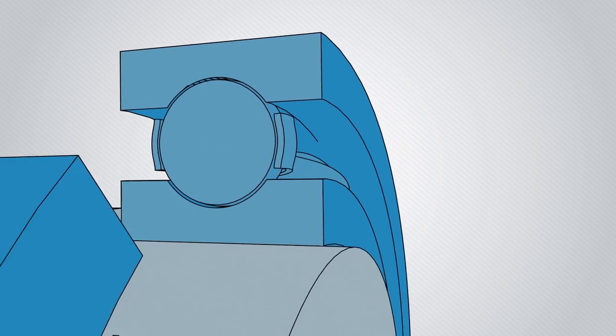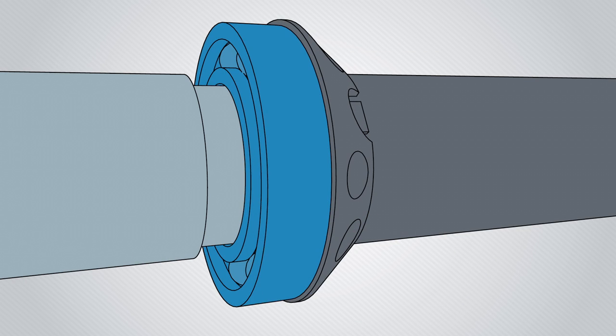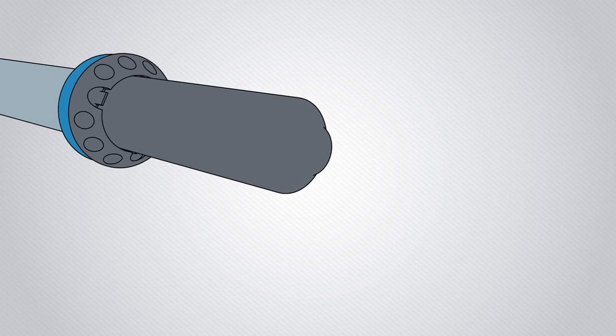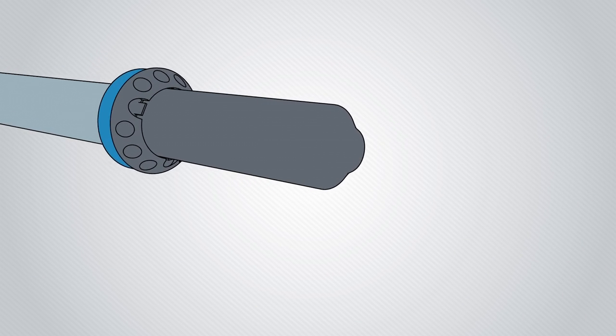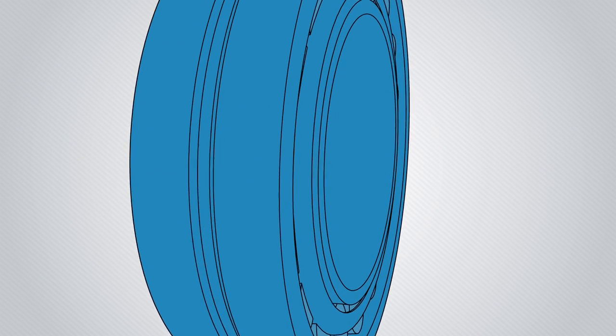Poor fitting accounts for a significant percentage of bearing failures. Often, small bearings are fitted on cylindrical shafts using mechanical methods. However, as bearings get larger, mechanical methods can no longer be used.